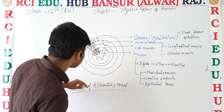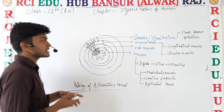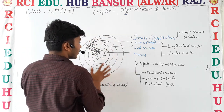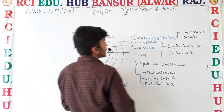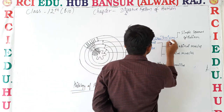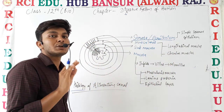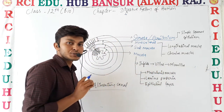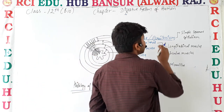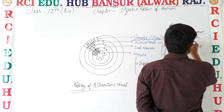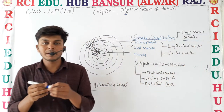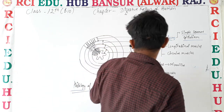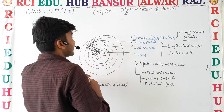The outermost layer of the alimentary canal is known as serosa. This is also known as peritoneum. This layer consists of simple squamous epithelium.